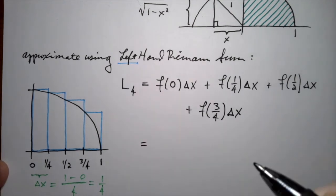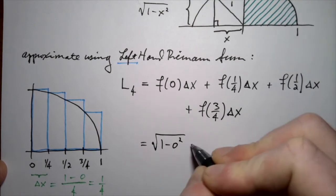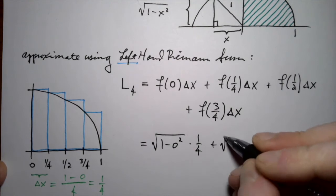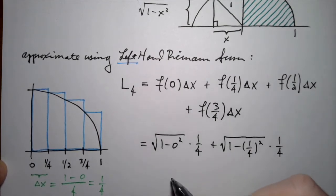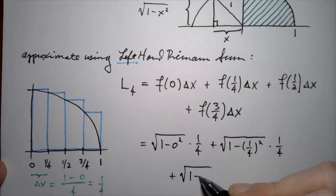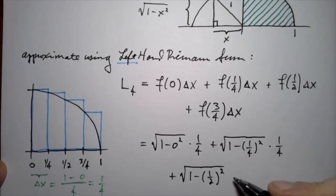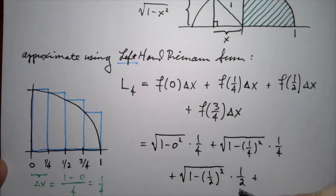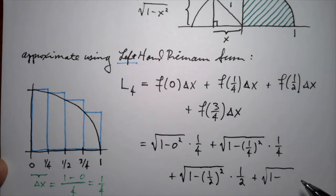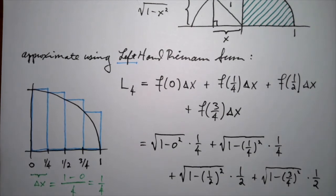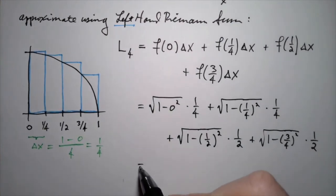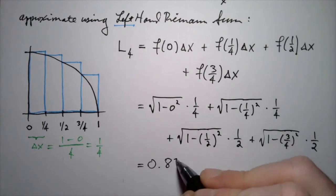Now let's plug into our function using delta x = 1/4 to determine the area of these four boxes and compute our left-hand Riemann sum. I write out the formula by plugging into the function. Notice that the multiplication by 1/4 — that's delta x, the width of each box — happens outside of the square root. The final term is the fourth box with left-hand side at 3/4, so we plug in 3/4 into the function. If you plug that into a calculator, you'll get 0.87393.